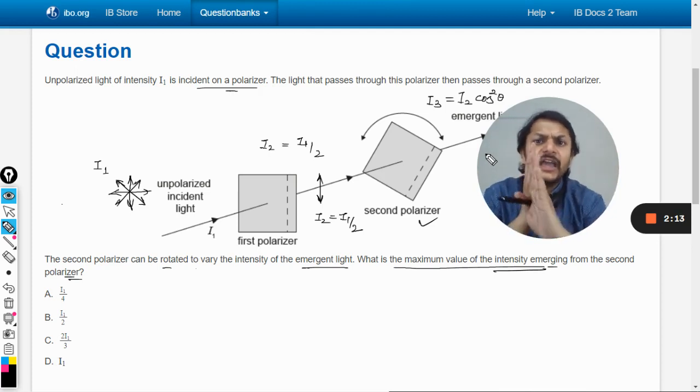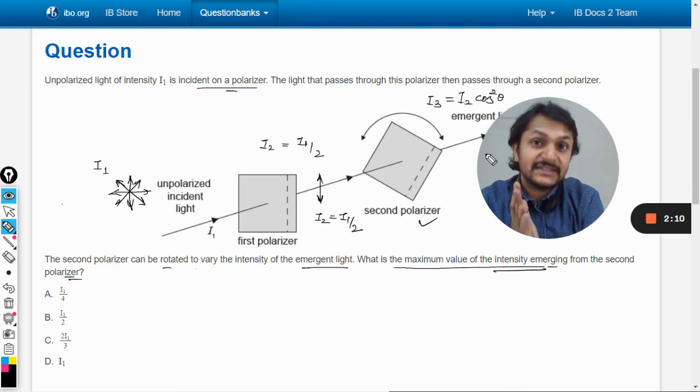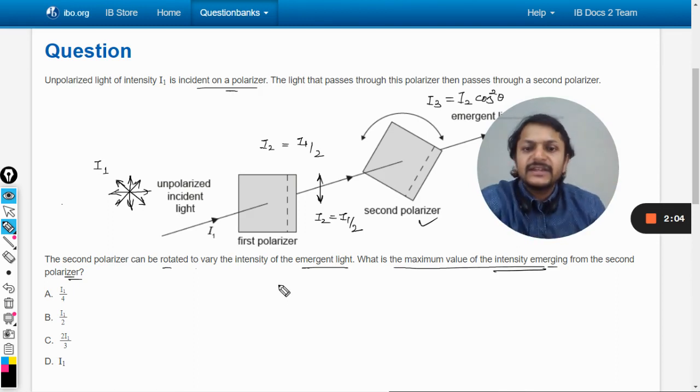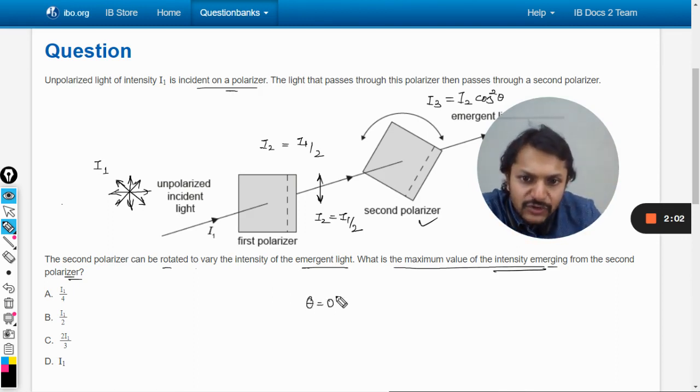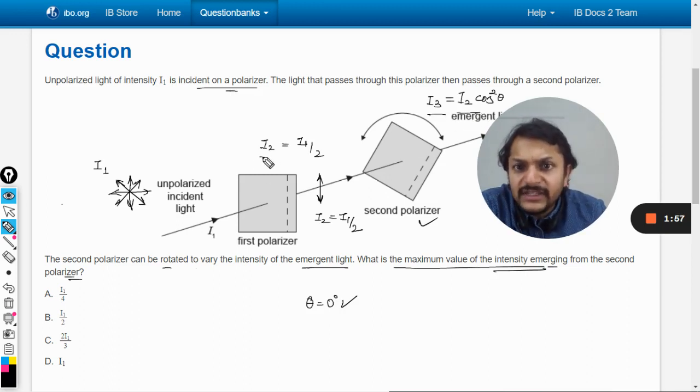So theta has to equal 0 degrees, there is no doubt about it. The intensity I₃ will equal I₂, meaning all of the intensity impinging on the second polarizer is able to pass through. No part is absorbed or deleted by the polarizer.